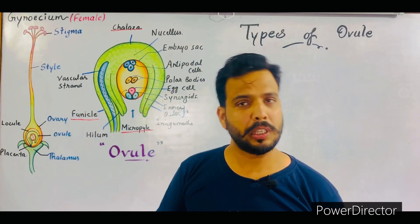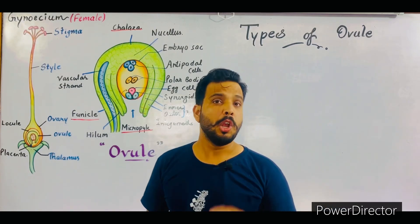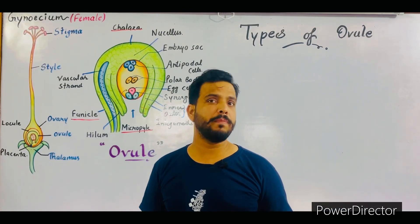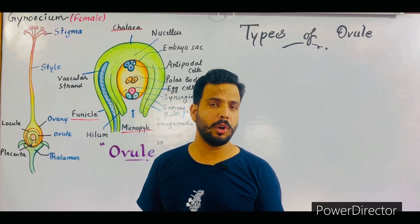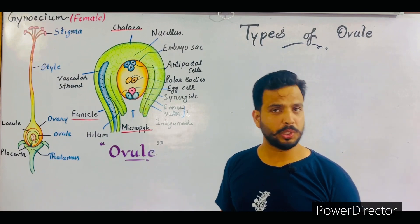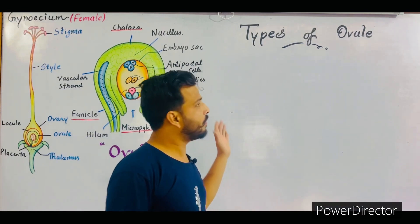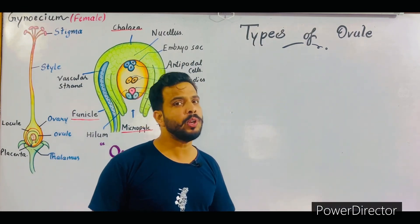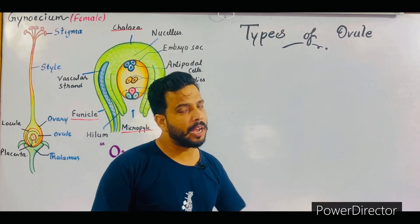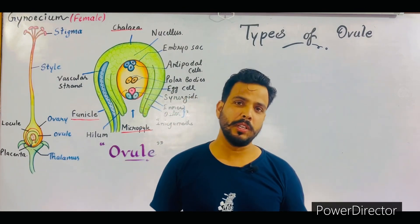So these are the six categories of ovules on the basis of the position of micropyle, chalaza, and funicle. First I will make a diagram of the different kinds of ovule, then I will describe each type.